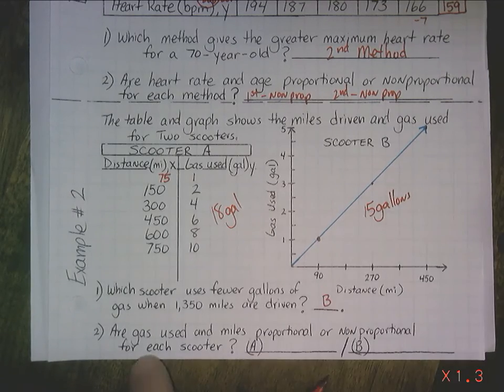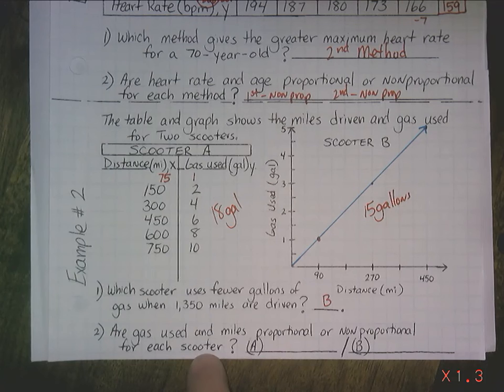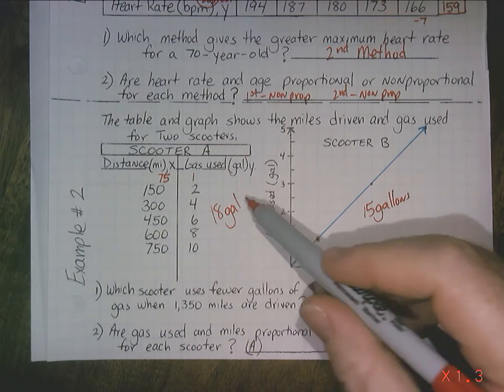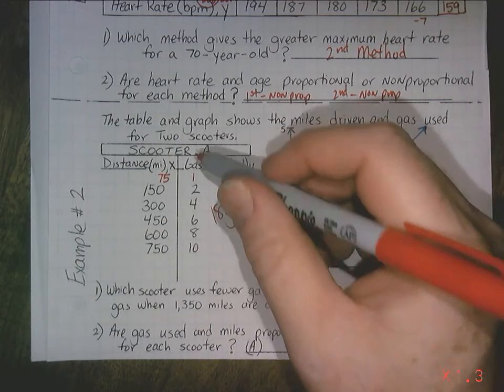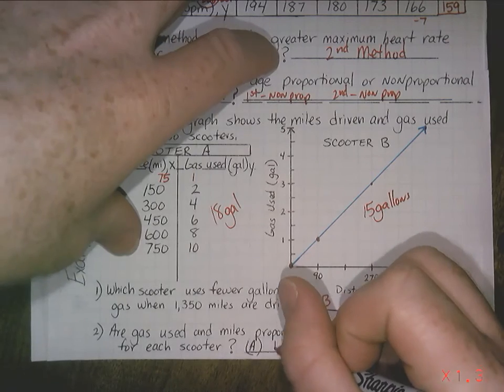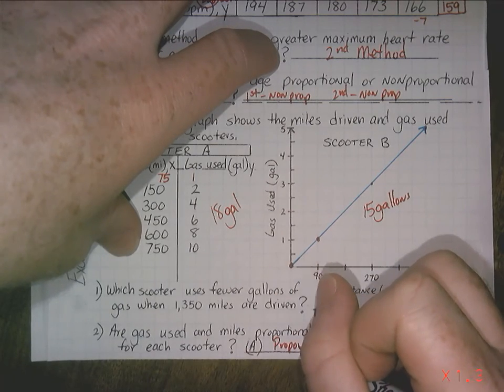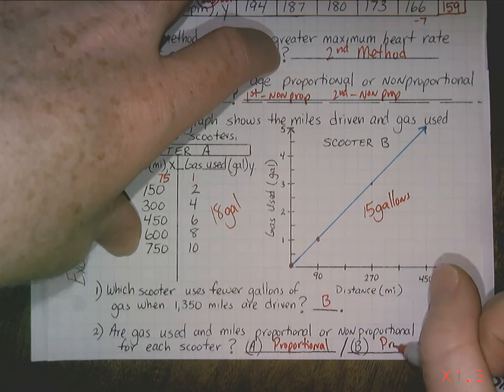Number 2, are gas used in miles proportional or non-proportional for each scooter? So if no gas is being used, are they going anywhere? No, no distance. So you can see they both start at 0,0, right? If this was 0, this would be 0 as well. So they're both going to be proportional. Proportional means they start at 0,0, and that's that.